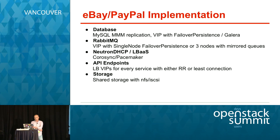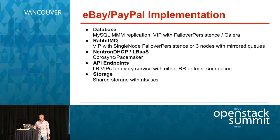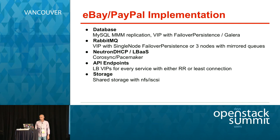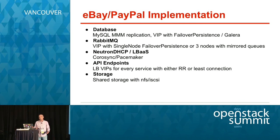We're constantly evolving — we experiment with solutions, and if they don't work well we try something else. In the lab things work fine, but when we go to production at large scale with thousands of hypervisors, we very often find problems and try to mitigate them or switch to something more stable. We try to use VIPs — load-balanced VIPs — for every service where possible.